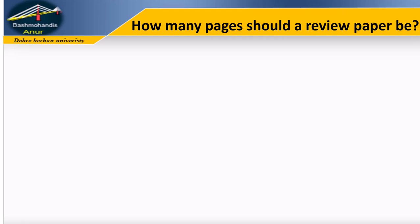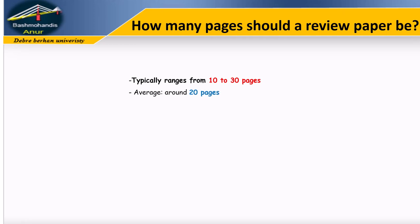How many pages should a review paper be? The length of a review paper can vary depending on the topic, the amount of available research, and the requirements of the journal or publication. However, most review papers range from 10 to 30 pages, with an average of around 20 pages. This length allows for a thorough examination of the topic while maintaining a focused and concise approach.